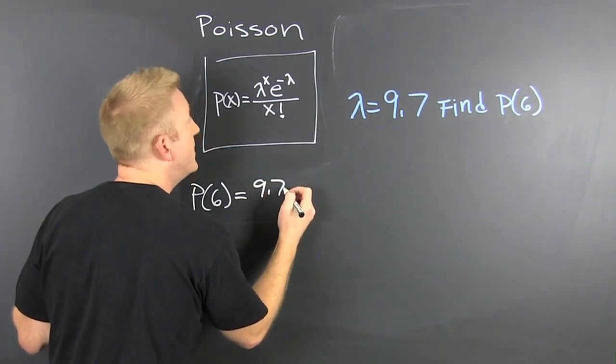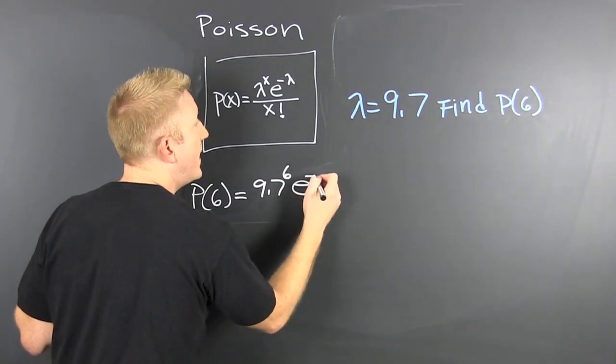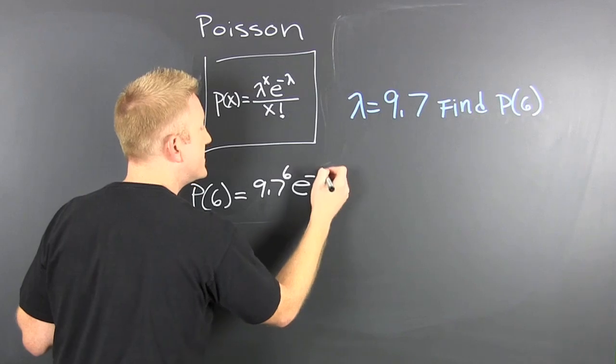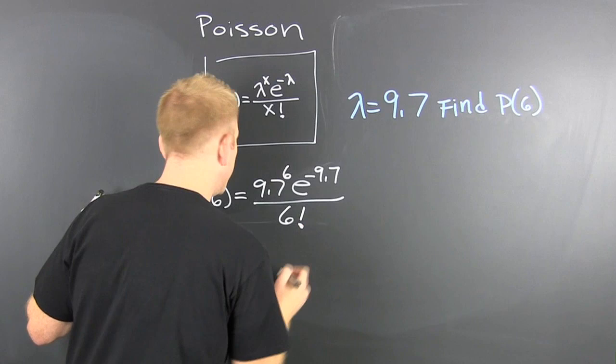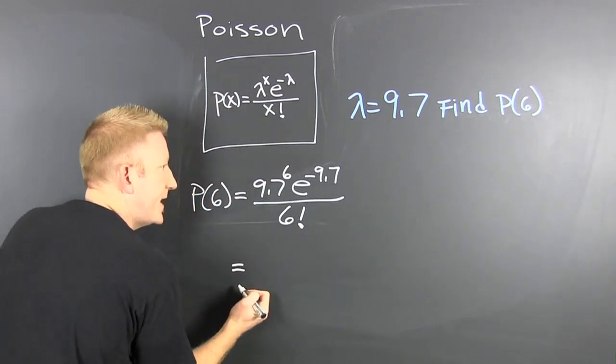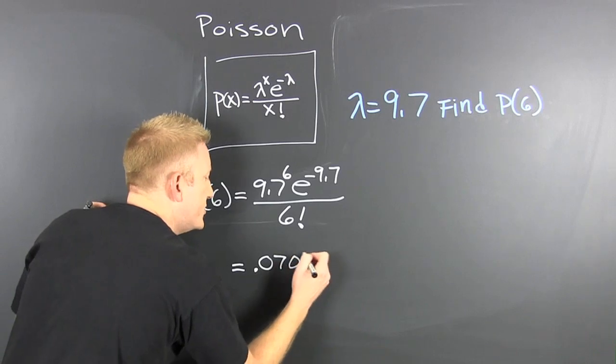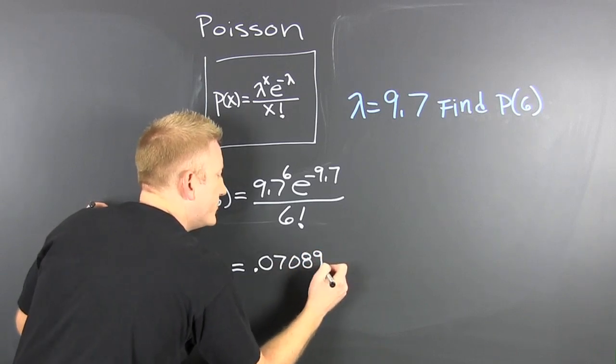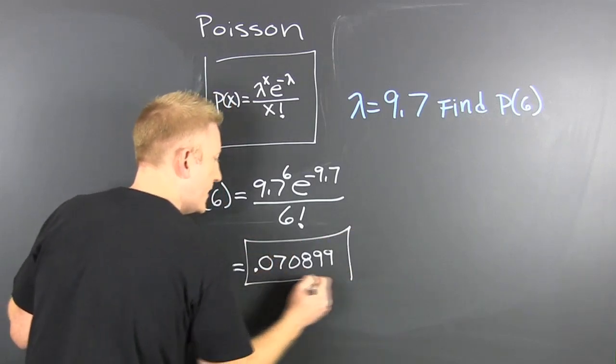You throw that into your trusty calculator and you find there is a seven percent chance that they will only get six complaints in a day.